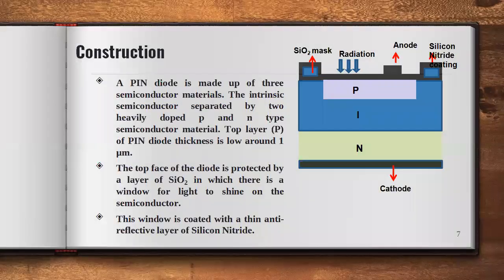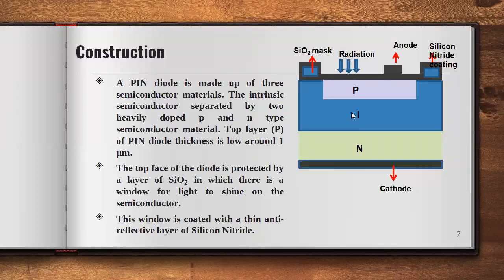From a construction point of view, the PIN diode is made of three semiconductor layers. The intrinsic layer is sandwiched between the P and N layers. The top P layer thickness is very low — around one micrometer. The top layer is protected by an SiO2 layer with a window for light to enter, and this window is coated with anti-reflecting coating using silicon nitride material.